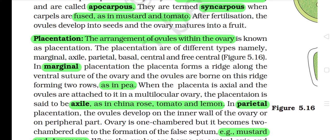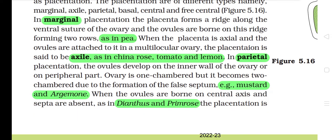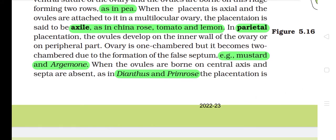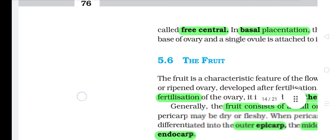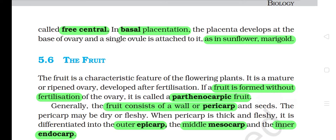The arrangement of ovules within the ovary is known as placentation. The placentation types are: marginal, axile, parietal, basal, central, and free central. In marginal placentation, the placenta forms a ridge along the ventral suture of the ovary and the ovules are borne on this ridge forming two rows, as in pea. When the placenta is axial and the ovules are attached to it in a multilocular ovary, the placentation is said to be axile, as in china rose, tomato and lemon. In parietal placentation, the ovules develop on the inner wall of the ovary; the ovary is one-chambered but becomes two-chambered due to a false septum, e.g. mustard and Argemone. When the ovules are borne on a central axis and septa are absent, as in Dianthus and primrose, the placentation is called free central. In basal placentation, the placenta develops at the base of the ovary and a single ovule is attached to it, as in sunflower and marigold.